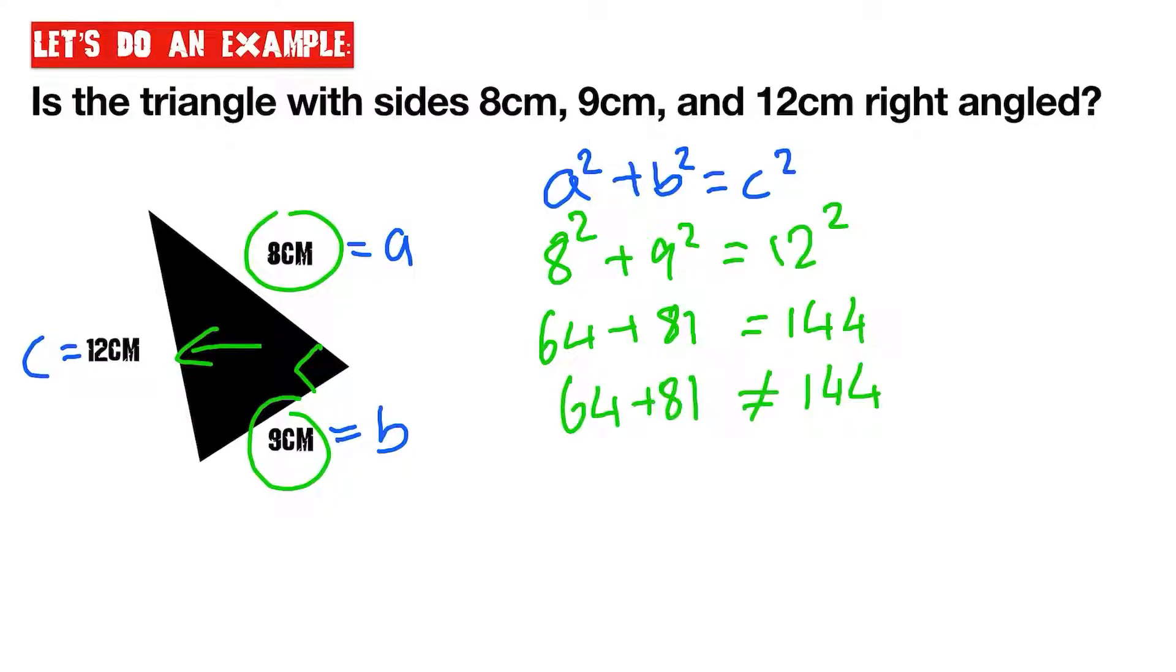In fact, 64 plus 81 equals to 145, which is just one too much of 144. So we should write that statement down. We should say, therefore, the triangle is not a right triangle.